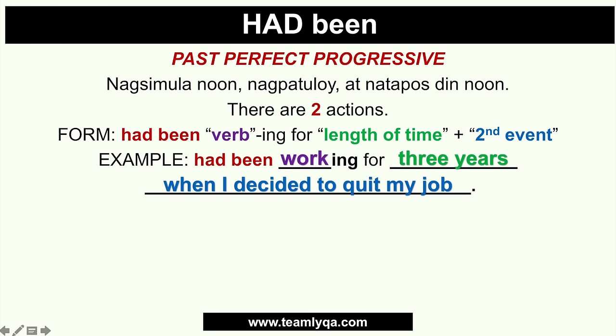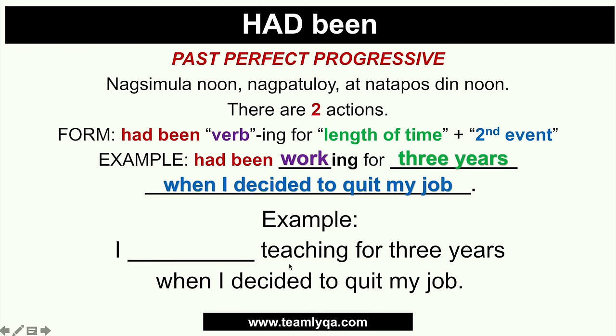The beauty of had-been is that it doesn't matter whether the subject is singular or plural. You can say: she had been working for three years when she decided to quit her job. You can also say: I had been working for three years when I decided to quit my job. Regardless of the subject, it's always had-been — you don't change it based on singular or plural.